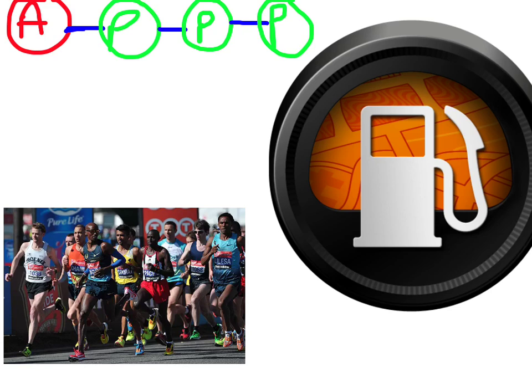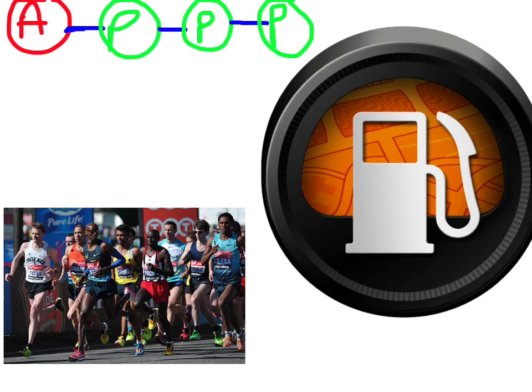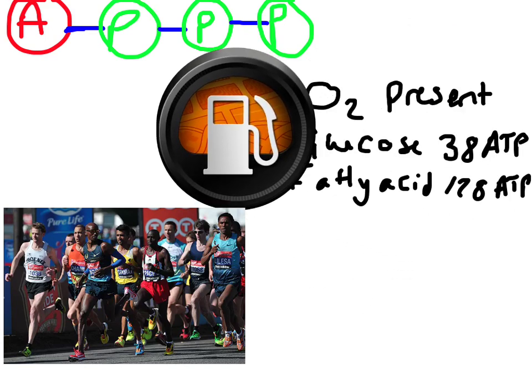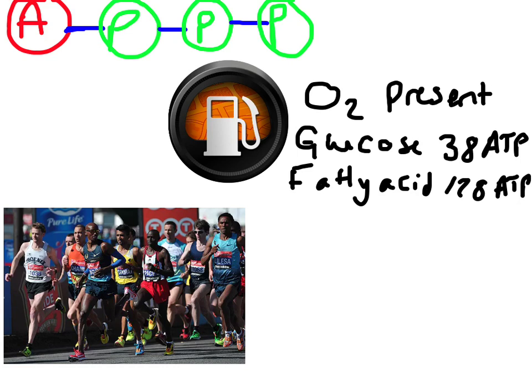Glycogen and fatty acids break down with the presence of oxygen to create ATP. When oxygen is present, it's able to break down glucose, which produces 30 ATP, and it's able to break down fatty acids, which produce 120 ATP — considerably more than any of the other energy systems.